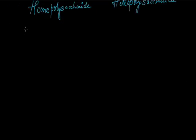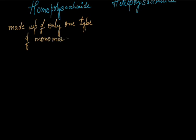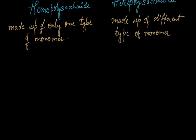Homopolysaccharide, as the name suggests, they are made up of only one type of monomer. Heteropolysaccharide are made up of different types of monomers.